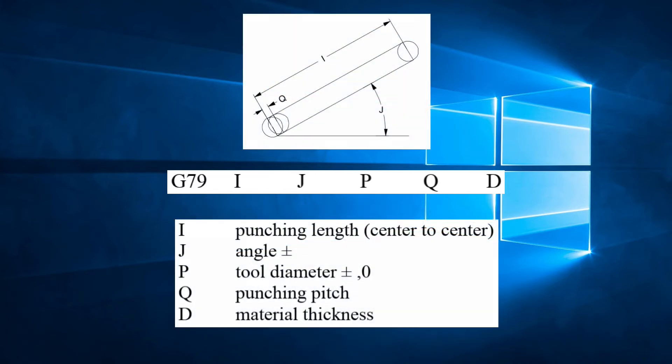Let's break this down. I is the length of the line from the center of the first hit to the center of the last hit. J is the angle of the line. P is the tool diameter. Q is the pitch or distance between hits. D is the material thickness.